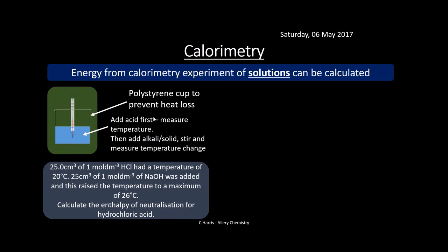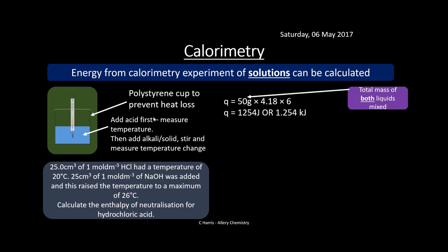Here's an example: 25 cm³ of 1 mol dm⁻³ HCl had a temperature of 20°C. Then 25 cm³ of 1 mol dm⁻³ sodium hydroxide was added, raising the temperature to a maximum of 26°C — a rise of six degrees Celsius. Calculate the enthalpy change of neutralisation for hydrochloric acid. Using Q = mcΔT, the mass this time is the mass of both liquids — we've mixed them — and we assume a density of 1 g cm⁻³. So 50 × 4.18 × 6 gives an energy change of 1254 joules, or 1.254 kilojoules.